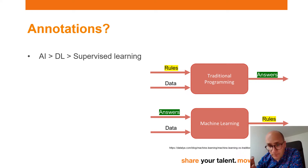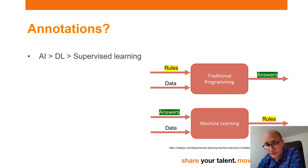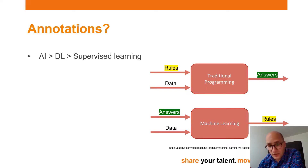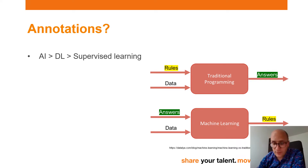In the supervised approach, it's important that we have not only the data, but we also need the answers. And given the data and the answers, the machine itself — the AI — is able to derive the rules, which it can use to diagnose new images, for instance.